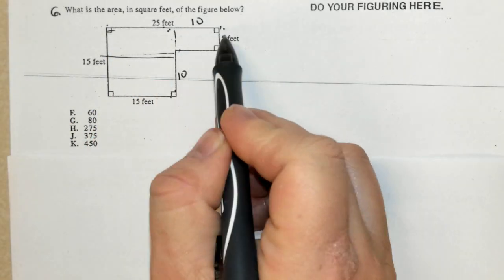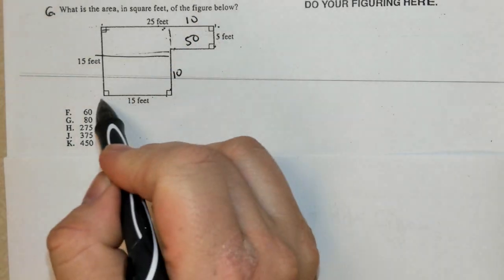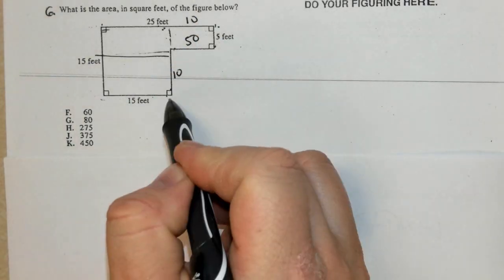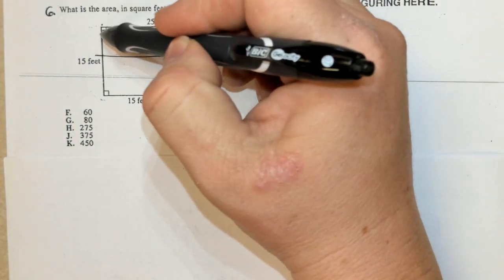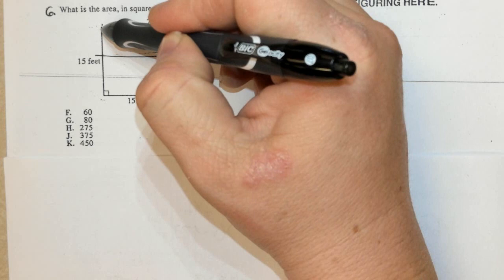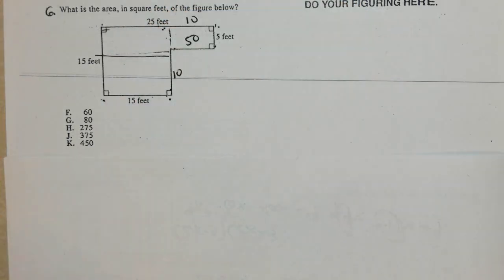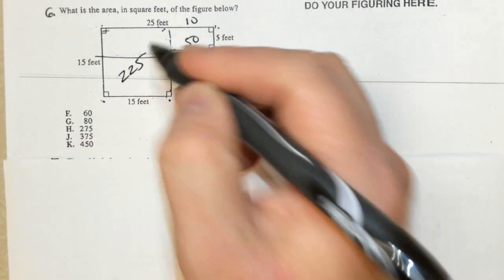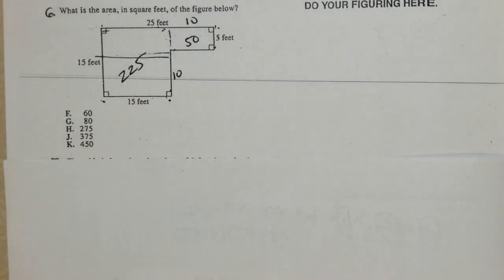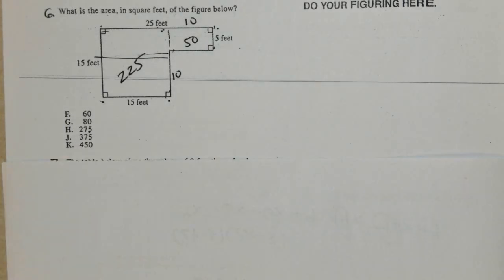10 times 5 is 50, 15 times 15 is 225, and 225 plus 50 is 275, which is h.